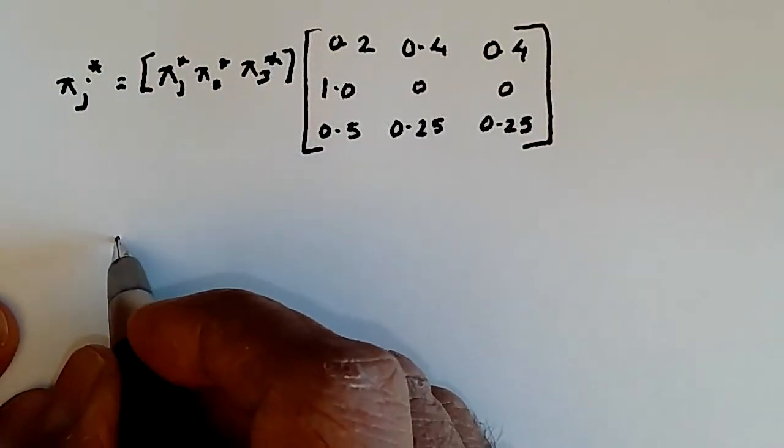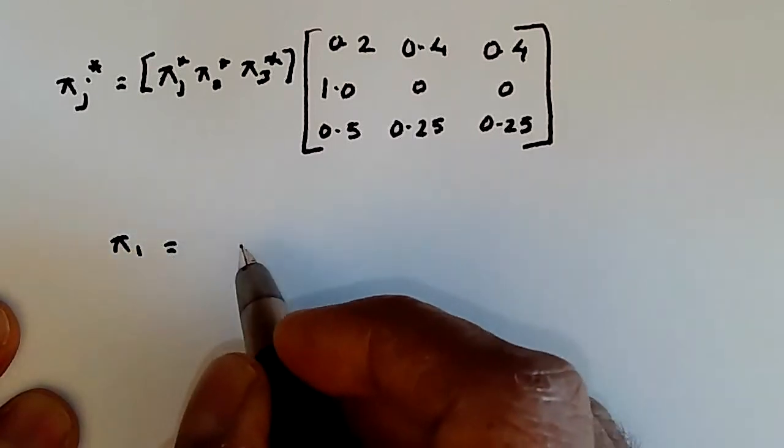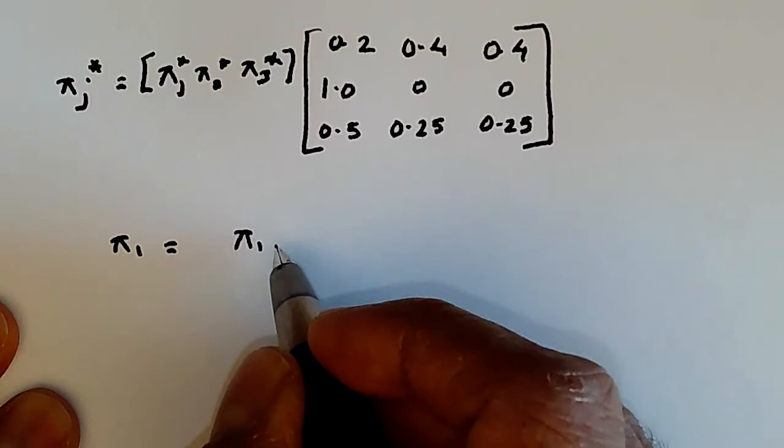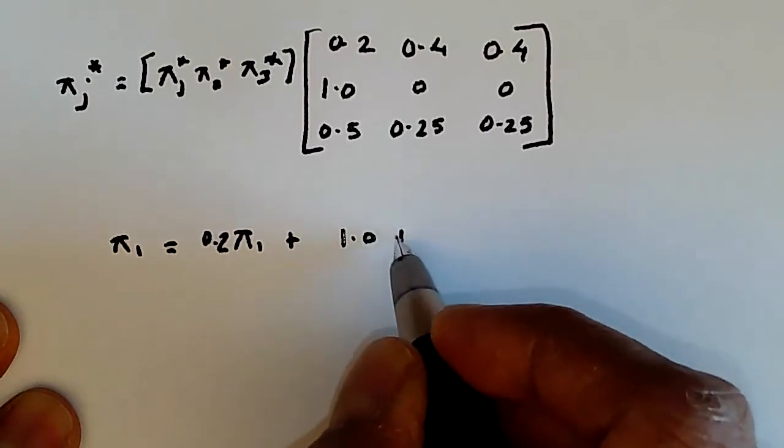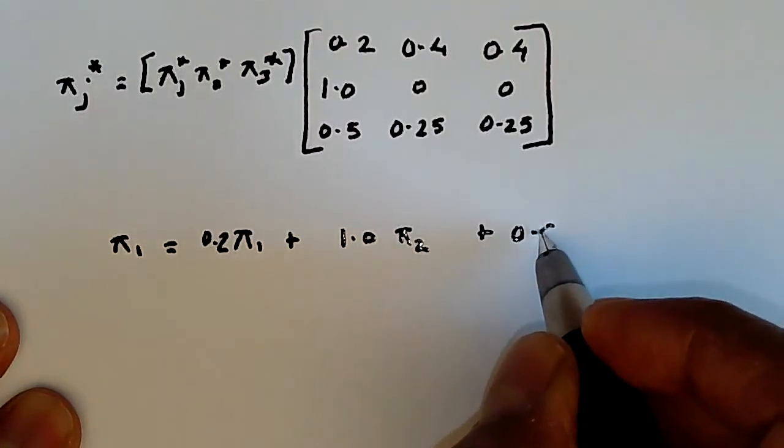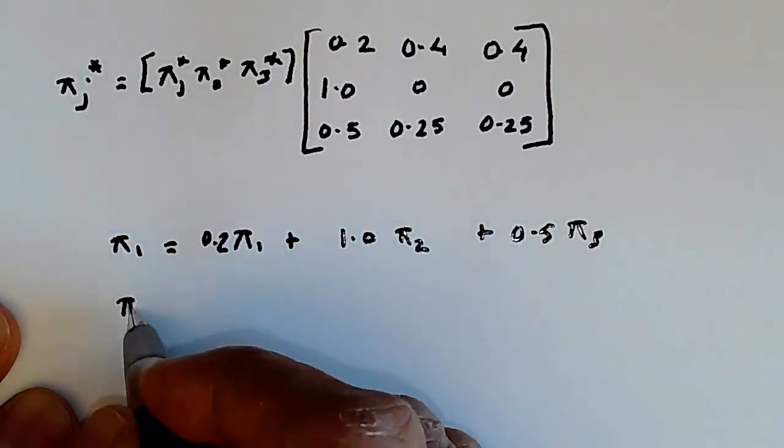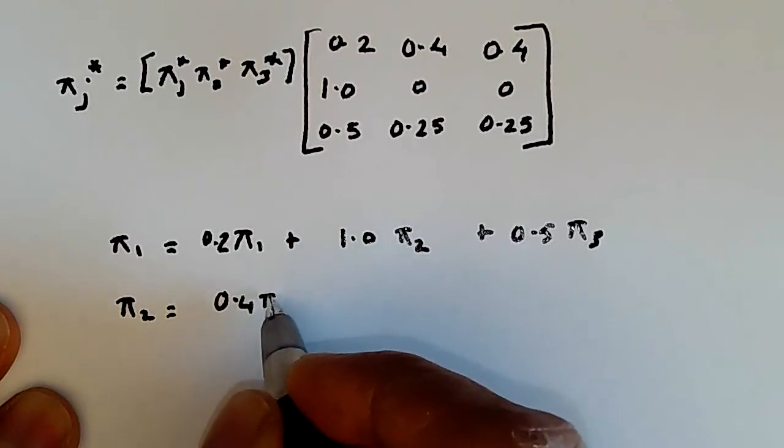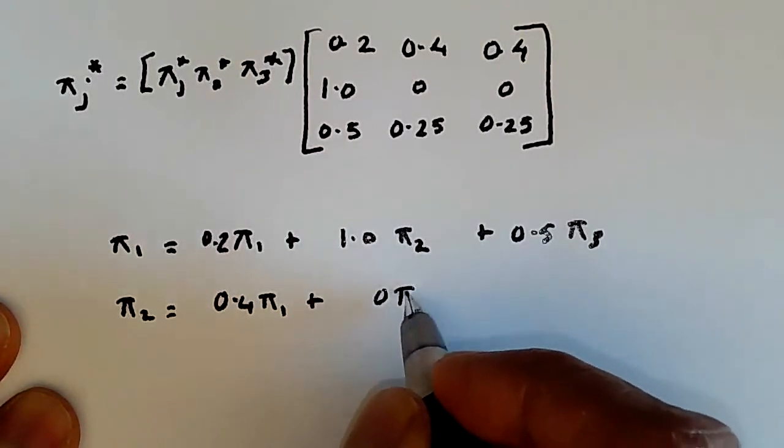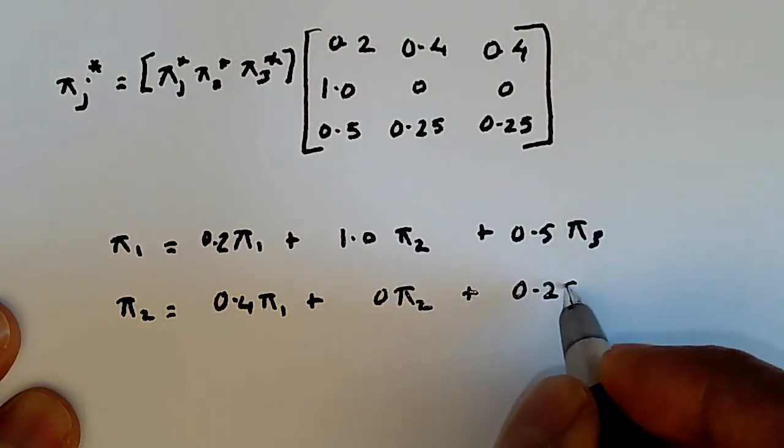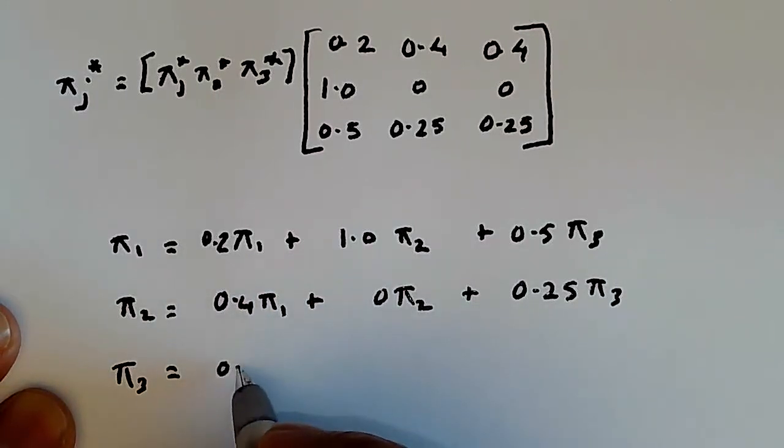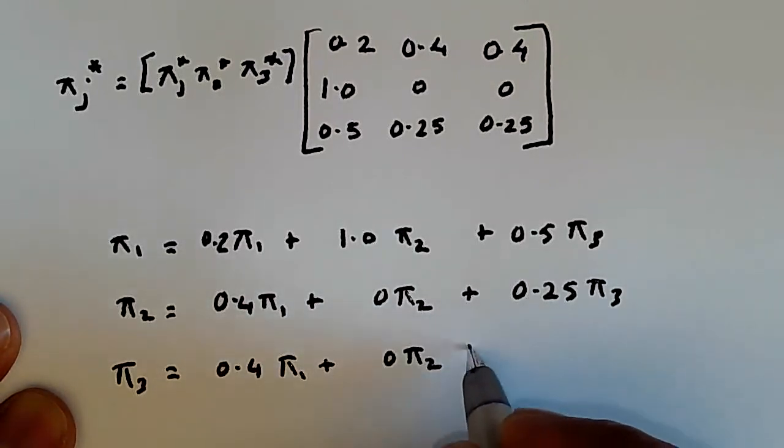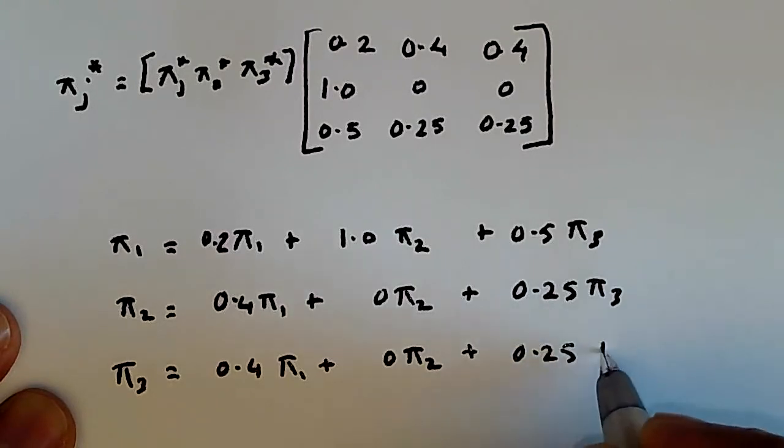So we're saying Pi 1 equals 0.2 Pi 1 plus 1.0 Pi 2 plus 0.5 Pi 3. Then Pi 2 equals 0.4 Pi 1 plus 0.25 Pi 3. And then finally Pi 3 equals 0.4 Pi 1 plus 0.25 Pi 3.